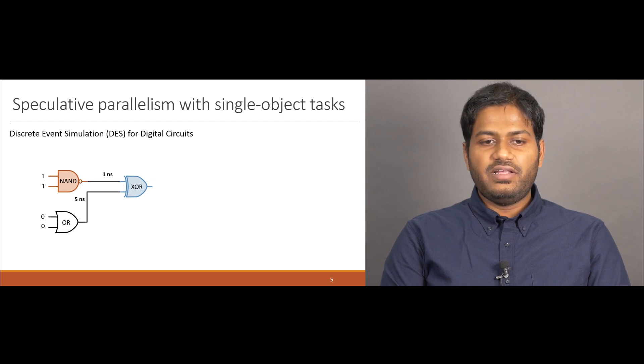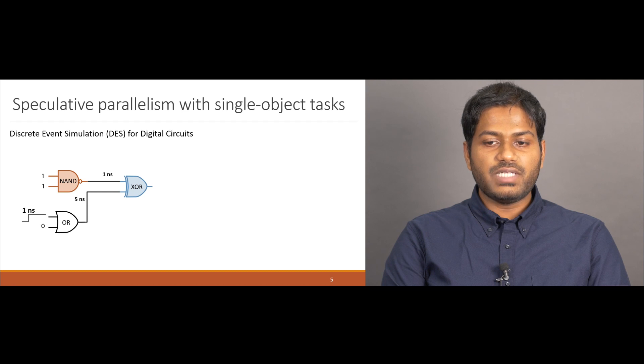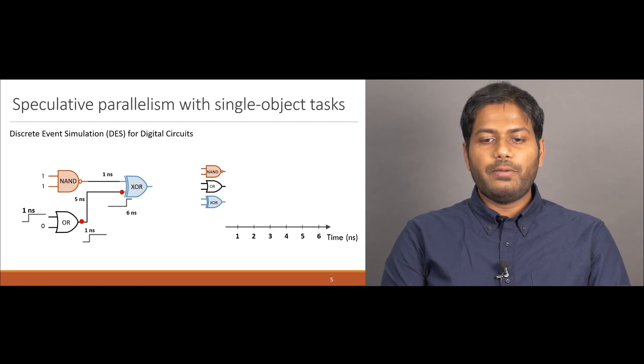To illustrate speculative parallelism, we look at DES, a discrete event simulator for digital circuits. DES computes the waveform of each wire by tracking when the logic state of a wire toggles. For instance, the OR gate here starts with both inputs at zero and the output also at zero. If one of the inputs was changed to one after some time, the output of the gate also toggles, which propagates downstream to the XOR gate after a certain delay. Here, we assume gates take no time and all delays are pushed down to the wires. We represent a simulation of this circuit by a task diagram, where the toggling of each input to a gate is a separate task.